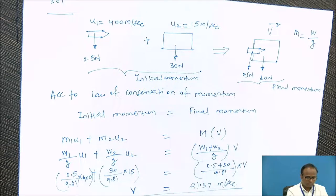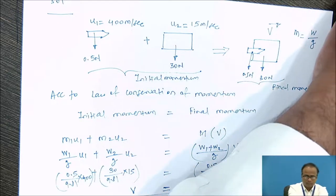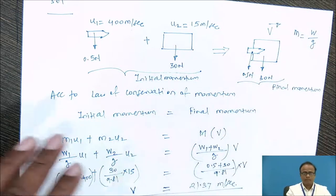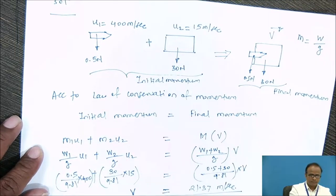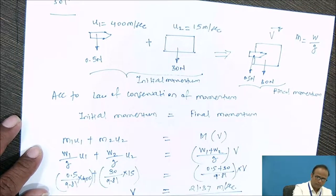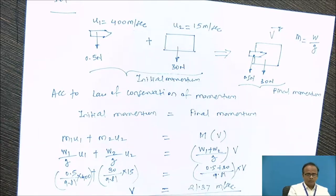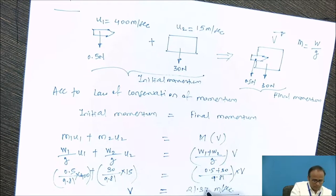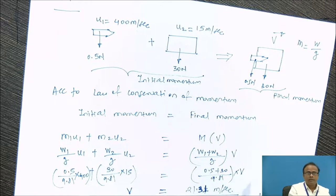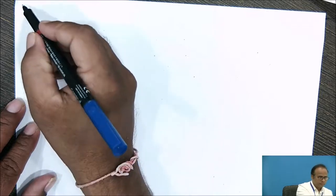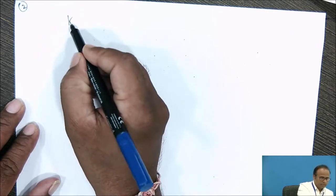Solving the equation, we obtain the common velocity V = 21.31 meters per second. Now let us find the kinetic energy lost.